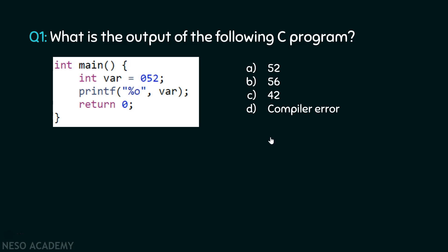Now there is one little change to this code. I change this to %o instead of %d. %o is a format specifier to print an octal value instead of a decimal value. What we are providing to this variable is an octal value, and if we try to print this, we are getting an octal value only. So the answer is 52 — there is no need of any conversions at all, because what we are trying to print is an octal value. Therefore, it prints 52 on the screen.